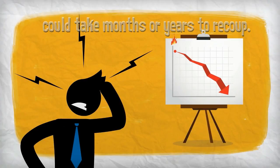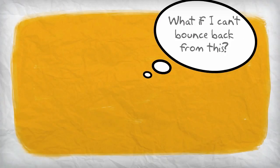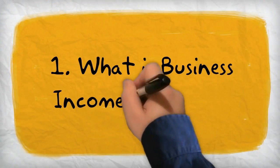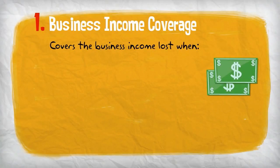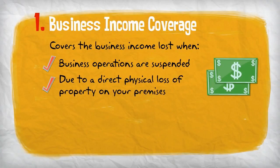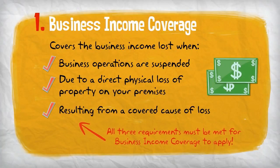This is where business income coverage becomes critically important to a business owner. Let's define business income coverage: it covers the business income lost when your business operations are suspended due to a direct physical loss of property on your premises resulting from a covered cause of loss. Unless all three of these requirements are met, business income coverage will not apply.